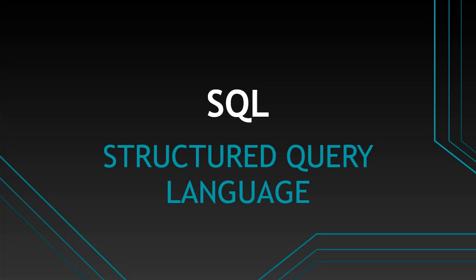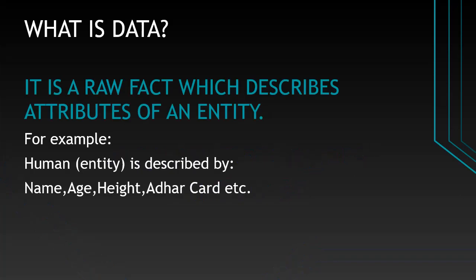What is data? It is a raw fact which describes attributes of an entity. For example, how we describe any person — we describe them by their name, age, height, Aadhaar card, PAN card, driving license, nationality, and so on.